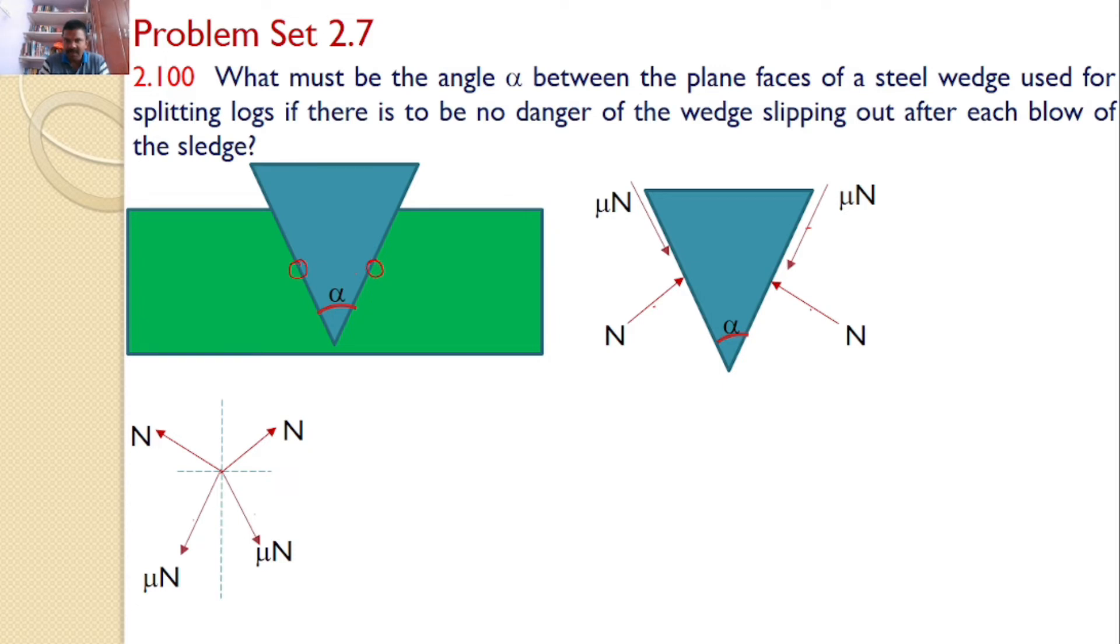Given that this angle is alpha. Now if you draw an exact vertical line here, we can understand that this angle will be alpha by 2 and this angle will also be alpha by 2. Hence the angle made by this N with horizontal will be alpha by 2, and the angle made by this mu N representing here, so this angle is alpha by 2, and this angle is alpha by 2, and here the angles are alpha by 2 and alpha by 2.